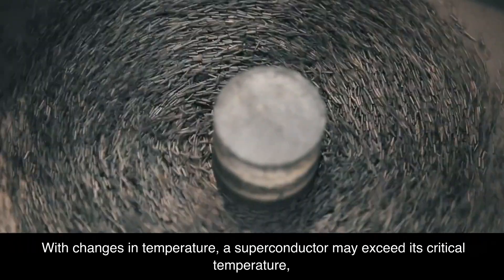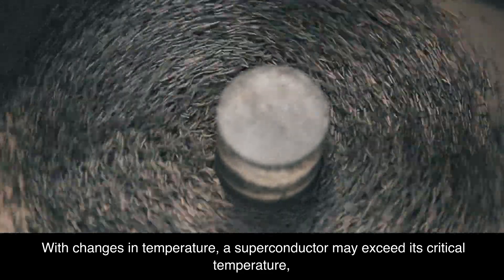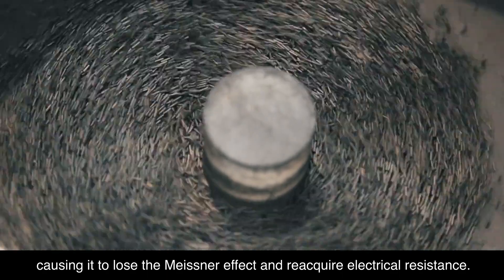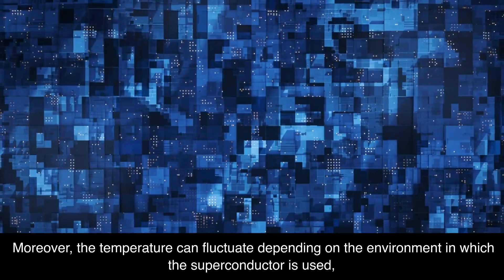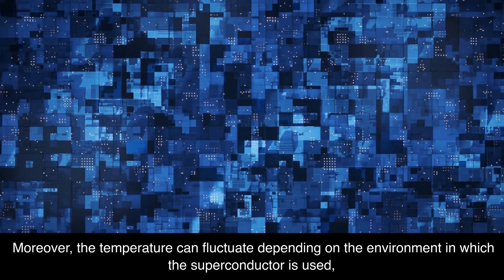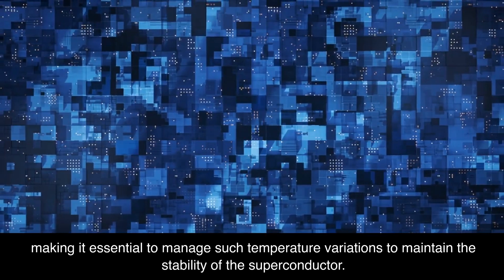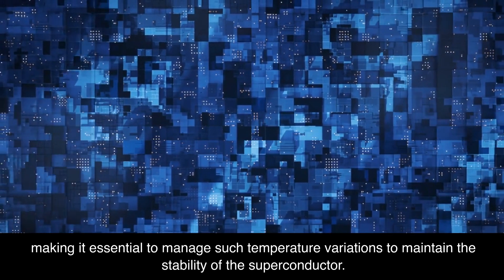With changes in temperature, a superconductor may exceed its critical temperature, causing it to lose the Meissner effect and reacquire electrical resistance. Moreover, the temperature can fluctuate depending on the environment in which the superconductor is used, making it essential to manage such temperature variations to maintain the stability of the superconductor.